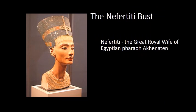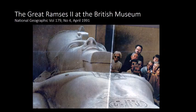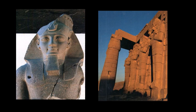Here is one example showing a woman with lighter skin color than men, and this is one example of a colossal statue. I got this photo from National Geographic magazine, April 1991 issue. This is the Great Ramses II at the British Museum — you can see the contrast: the people looking at it look very small compared to the huge statue.